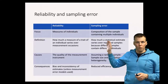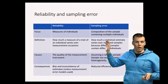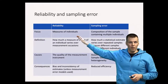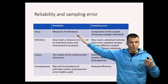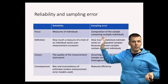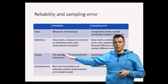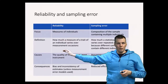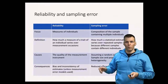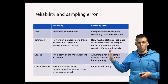Sampling error refers to the composition of the sample and how it varies from one random sample to another. Reliability measures the same individuals — how much they vary from one study to another if we use the same measurement procedures. Sampling error refers to how much different repeated random samples from the same population influence the study results. So reliability is how much a measure of a trait of an individual varies over measurement occasions, whereas sampling error is how much a statistical estimate varies over repeated samples because different samples contain different individuals.